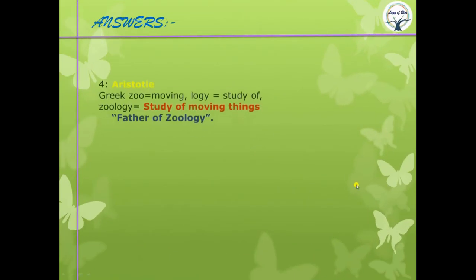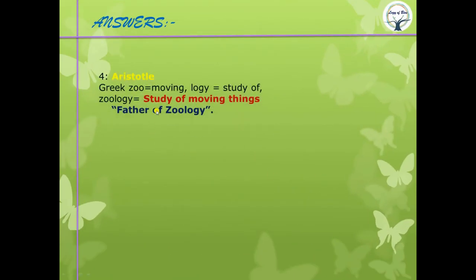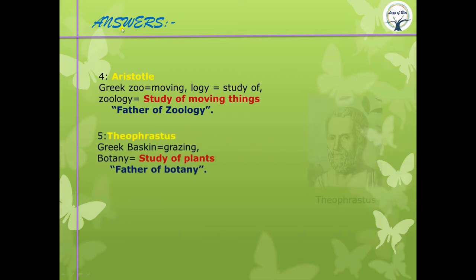The father of zoology is also Aristotle. Zoo in Greek means moving and logy means study of, so zoology is the study of moving things — that is, animals. Zoology is the branch of biology which deals with the study of animals, and Aristotle is its father.